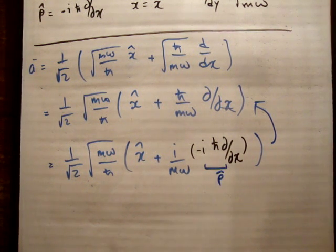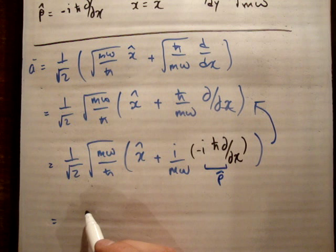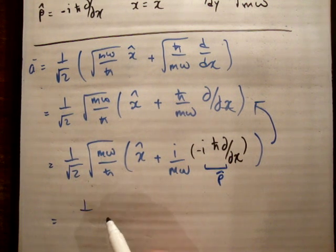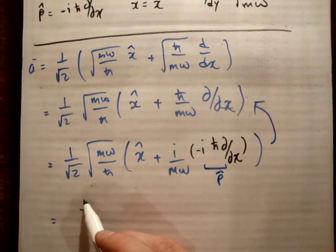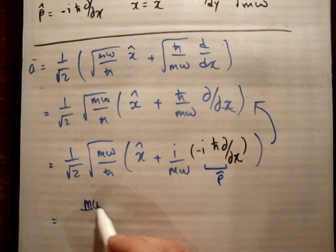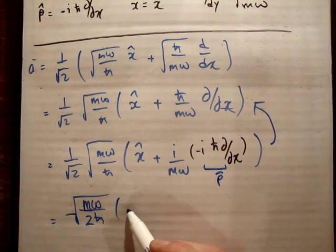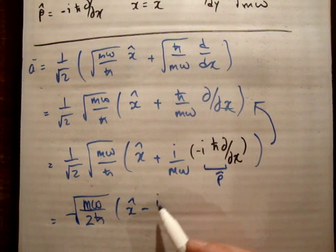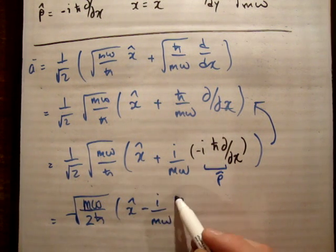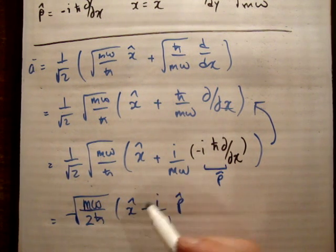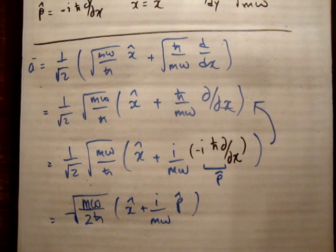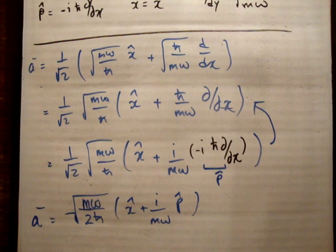That means we can rewrite this as 1 over root 2 times √(mω/2ℏ) times (x̂ + i/mω · p̂) and that equals a⁻. That's the way we can write our a⁻ operator.